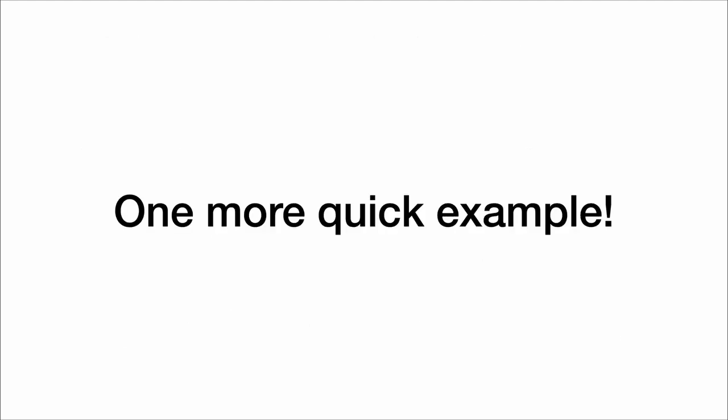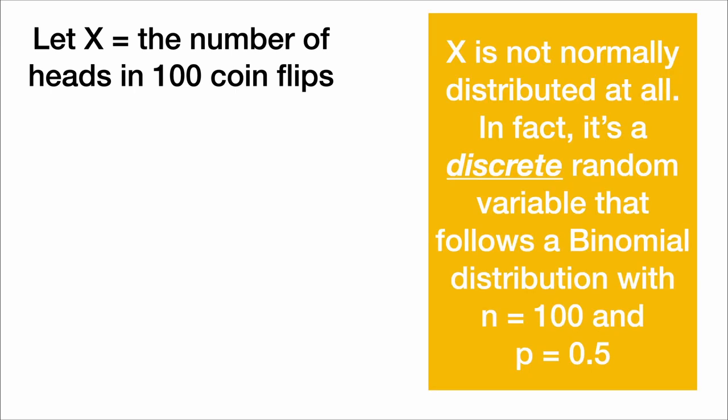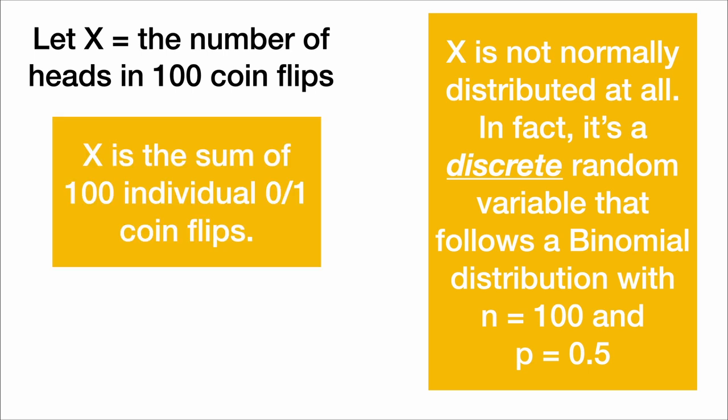Let's do one more quick example. Let's let x be the number of heads in 100 coin flips. Now x is not normally distributed at all. In fact, it's a discrete random variable that follows a binomial distribution with sample size 100 and probability of success 0.5.